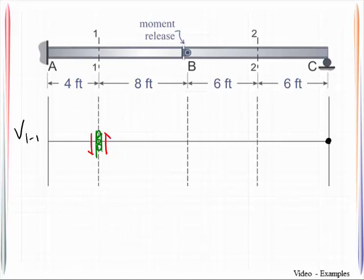If I look at point C, it's a roller, which means it can rotate but it cannot move up and down. So I know the displaced position is that.